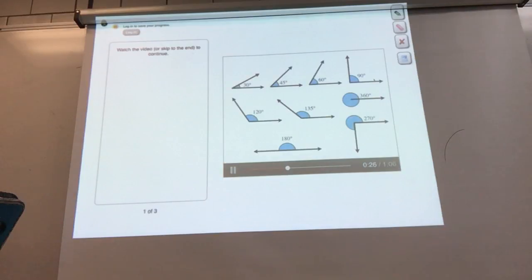This is a 90 degree angle. 90 degree angles are also known as right angles. Another unit for measuring angles is the radian. 180 degrees is the same thing as pi radians.